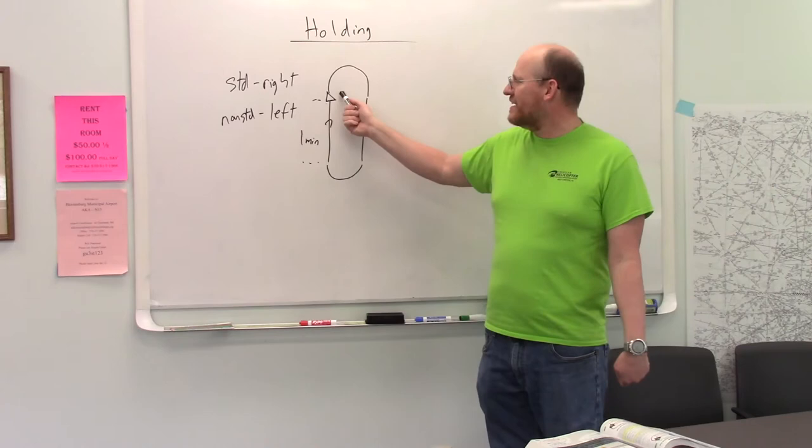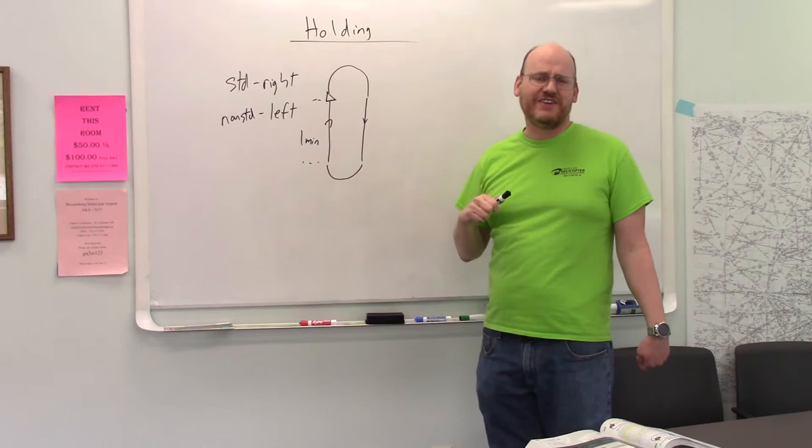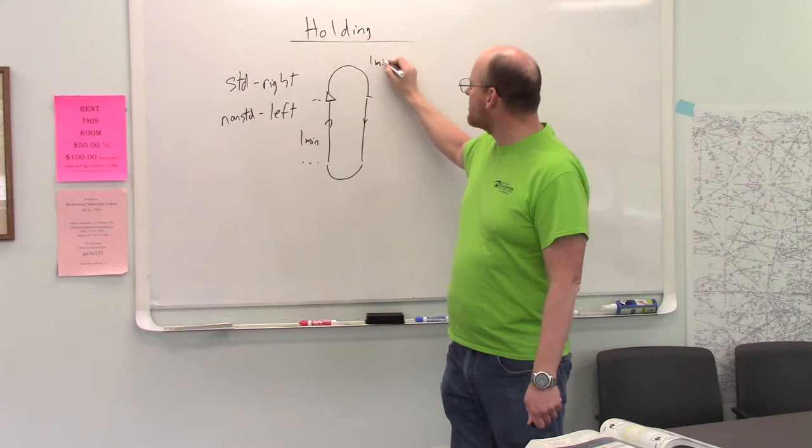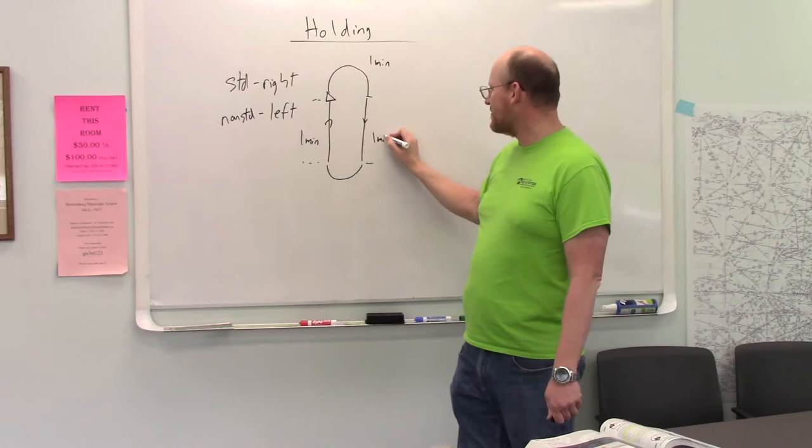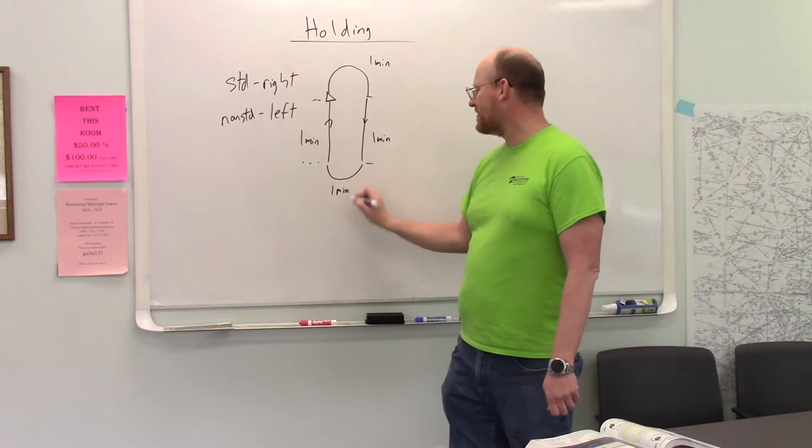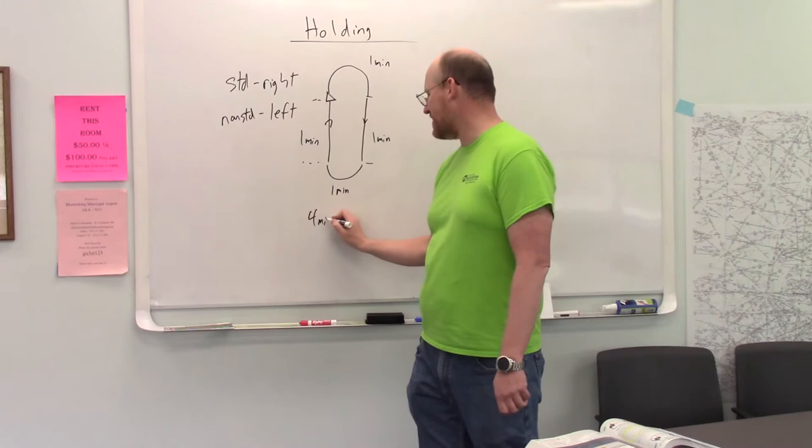So, you want to have a one-minute inbound leg, and you should know by now how long does it take to do a 180-degree turn at a standard rate. That's also one minute. If there's no wind, you fly outbound. If there's no wind, you're going to have a one-minute inbound leg, and then you make another 180-degree turn, which takes a minute. So, this whole thing takes four minutes.